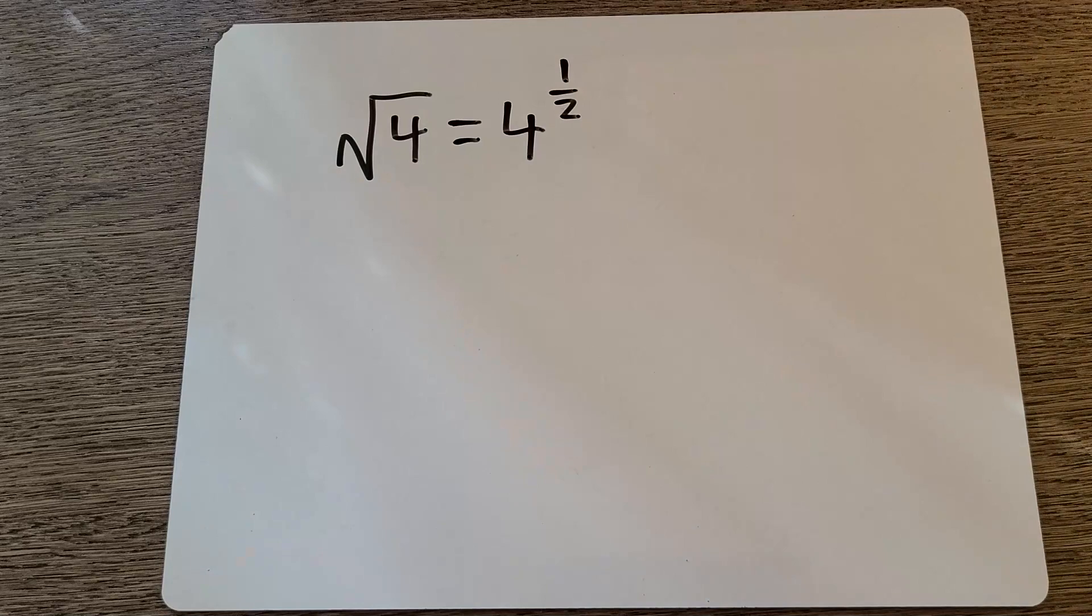For instance, a teacher would tell us that the square root of 4 is the same as 4 to the power of one half. And then they would just move on, and we were supposed to memorize this and accept it as the way the world works and not ask any questions.